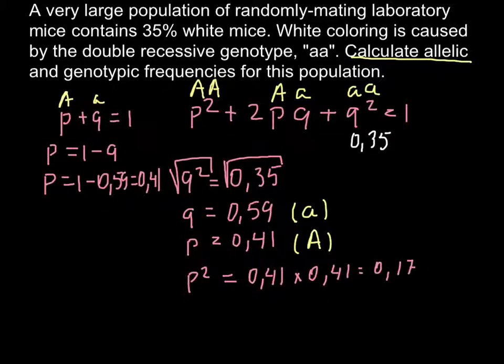I round all my answers to two decimal places after the comma, so p² = 0.17. This is the frequency of the homozygous dominant.